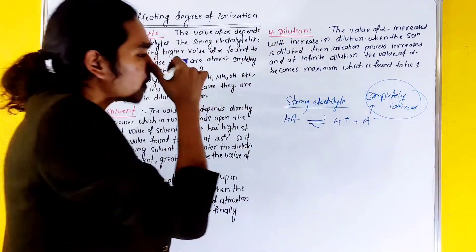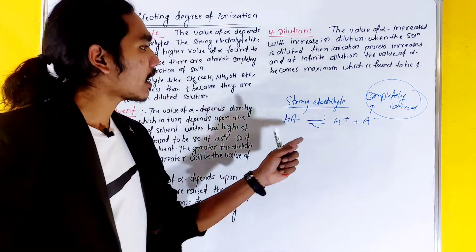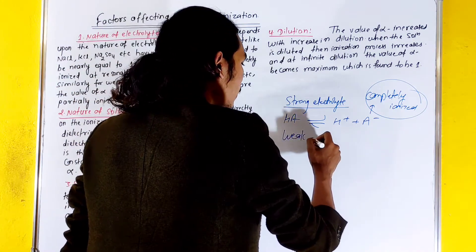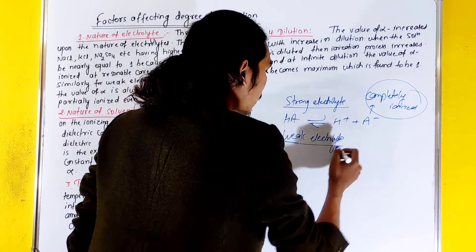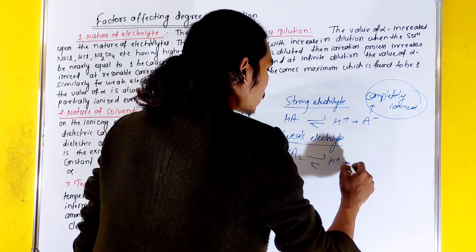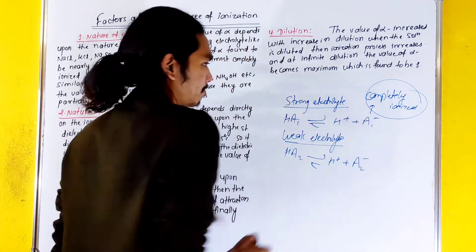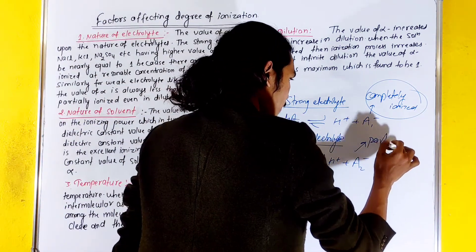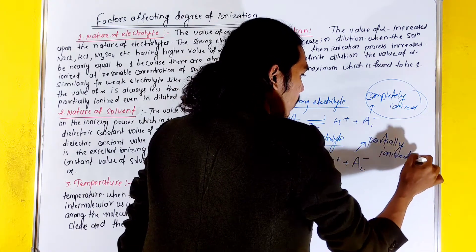What do you think about this? How can you make these two parts completely separate? A strong electrolyte is completely ionized. Otherwise, a weak electrolyte is a weak electrolyte — it is partially ionized. Weak electrolytes like HA have a high rate of partial ionization, and are only partially ionized.